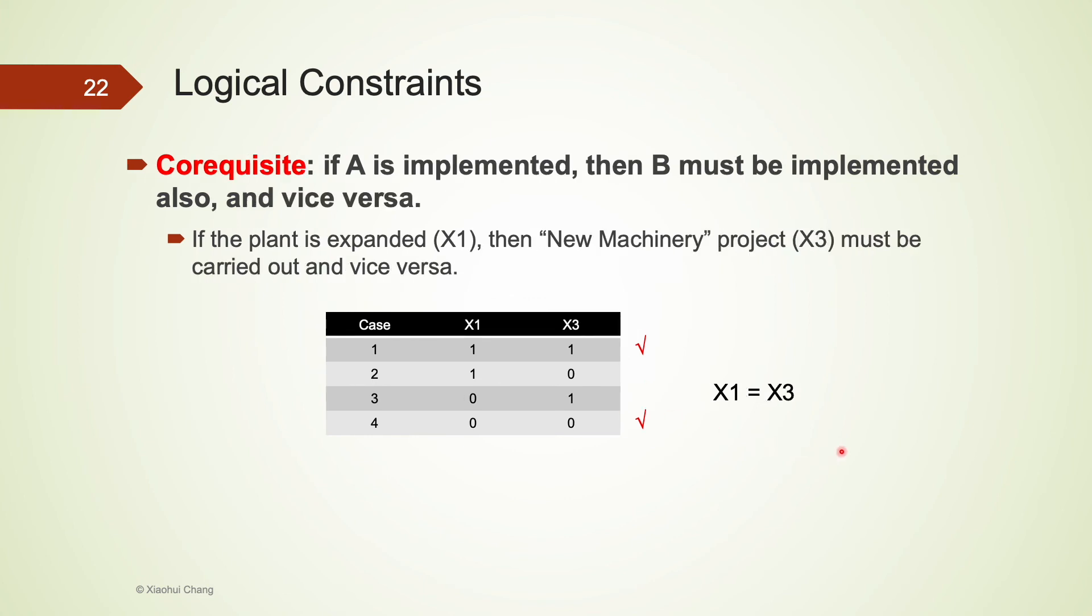Co-requisite constraint requires that if A is implemented, then B must also be implemented, and vice versa. Back to our capital budgeting example. For example, if the plant is expanded x1, then new machinery project x3 must be carried out, and vice versa. For all four cases, only the first case and the last case meet the constraint. This constraint can be represented using x1 equals to x3.